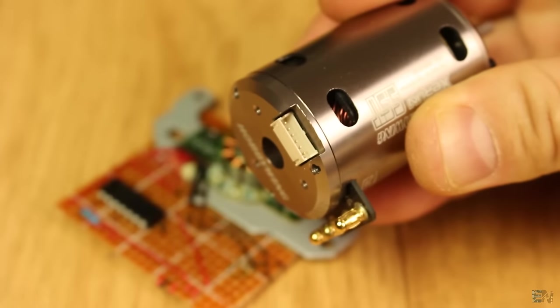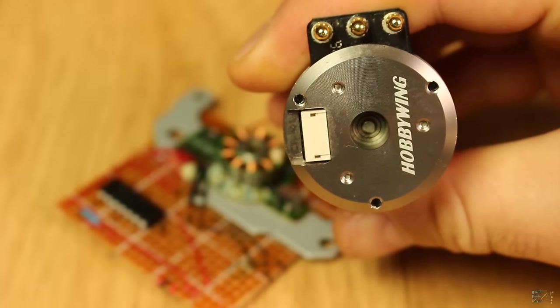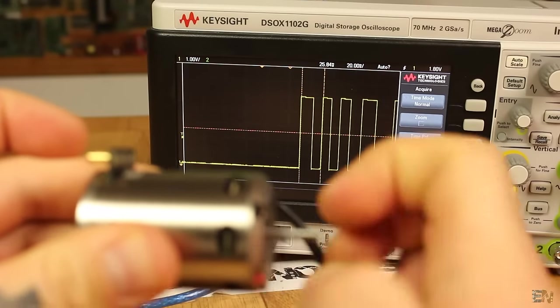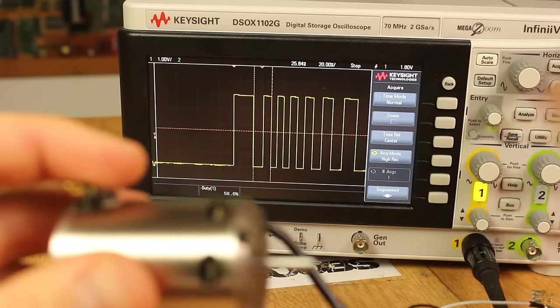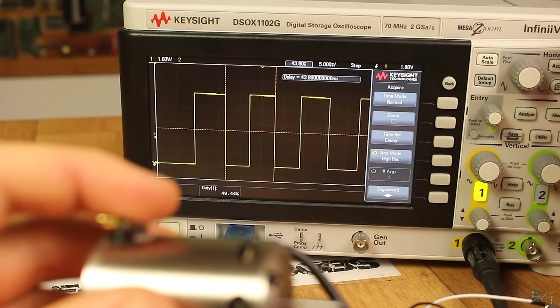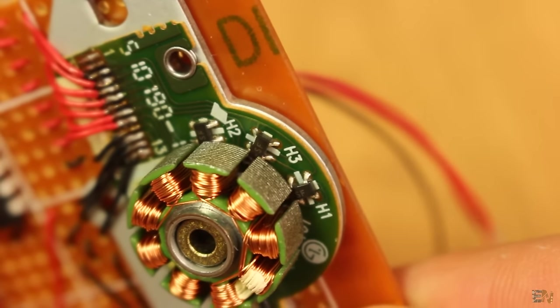If you buy a sensored motor, the hall sensors are already amplified. So when the magnet is in front of it, you will get a low or high value. In this case ground or 5 volts, as you can see here on my oscilloscope when I rotate this commercial sensored motor. But our hall sensors have no amplifying circuit, so that's the next thing to do.